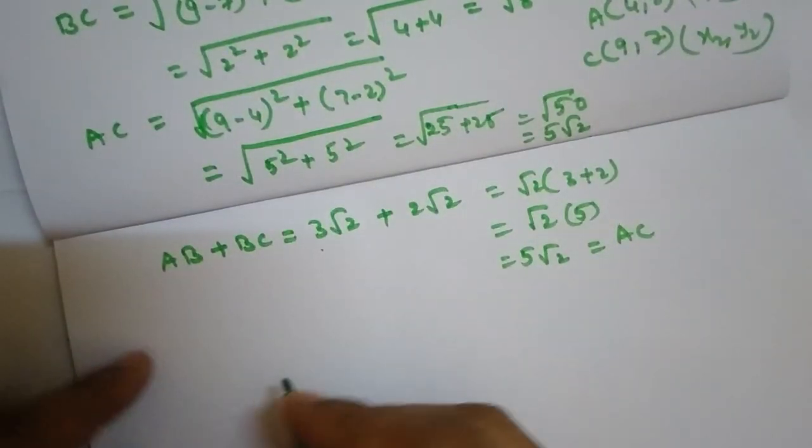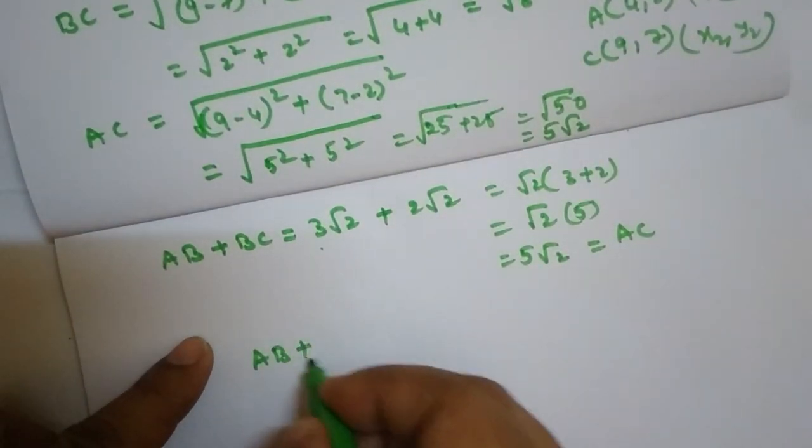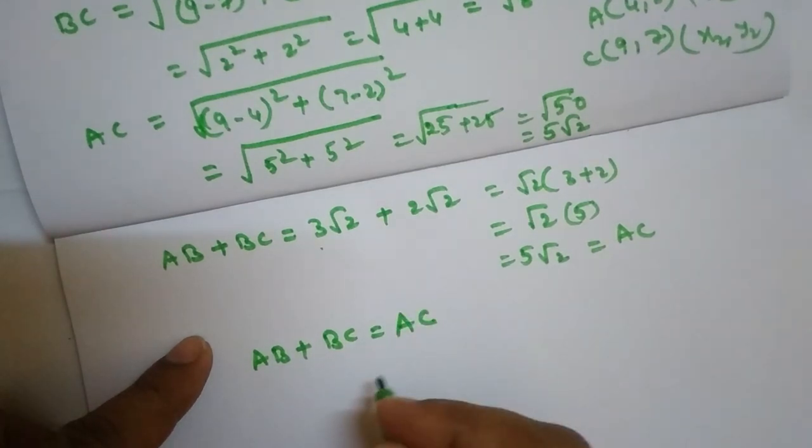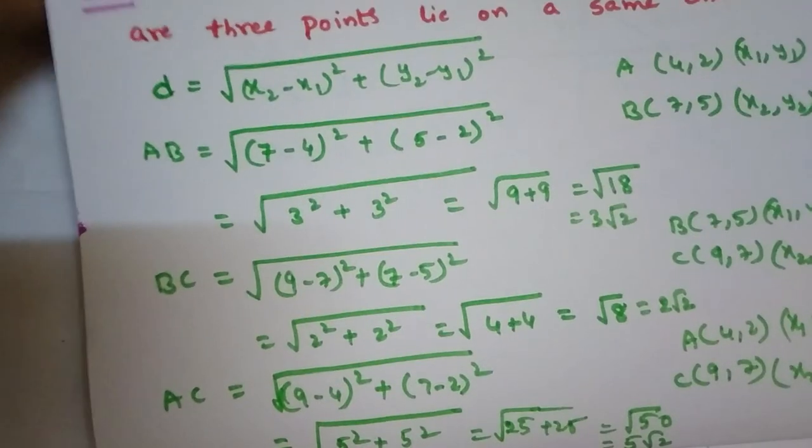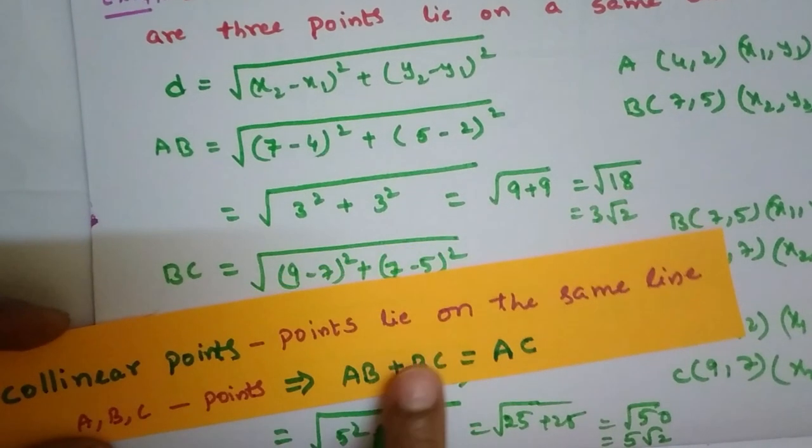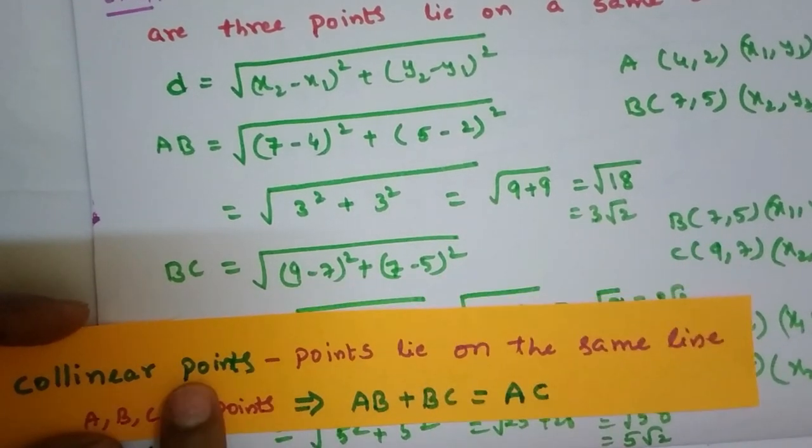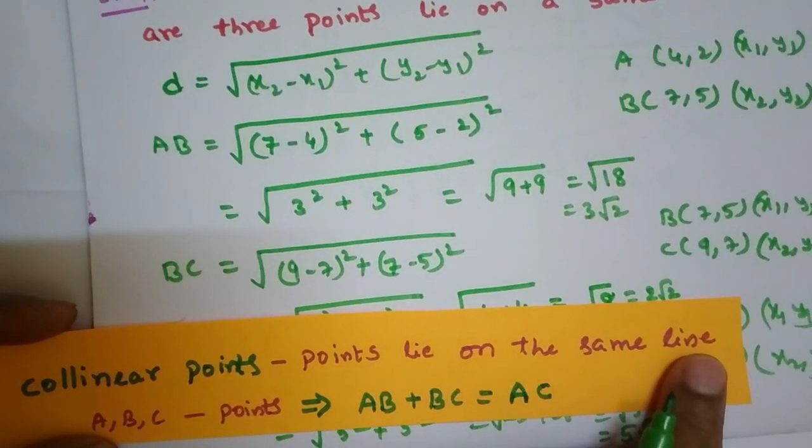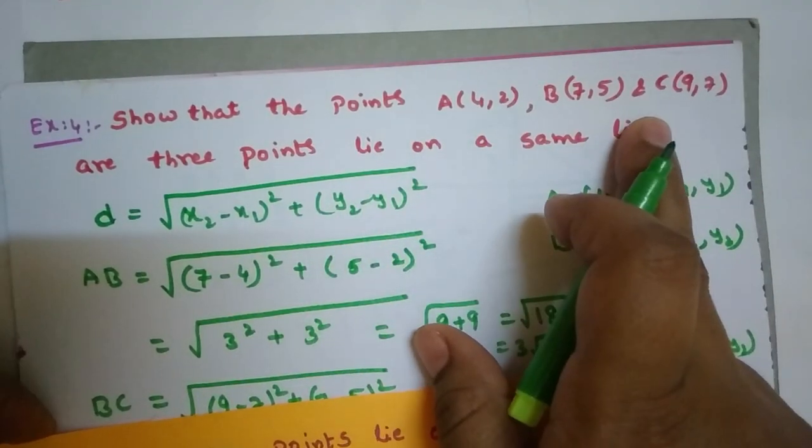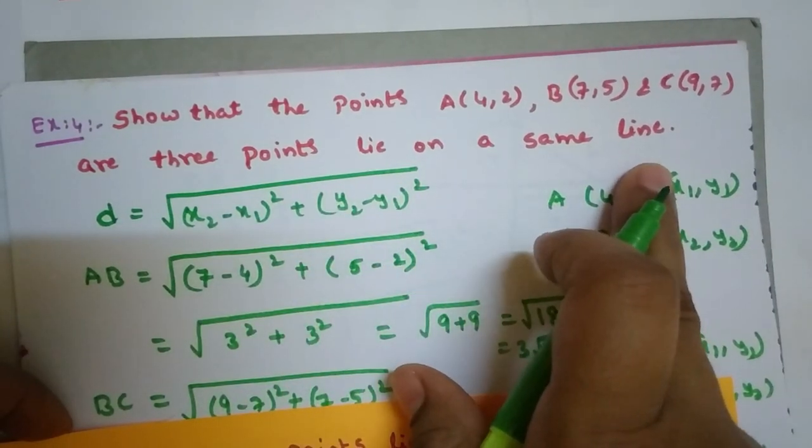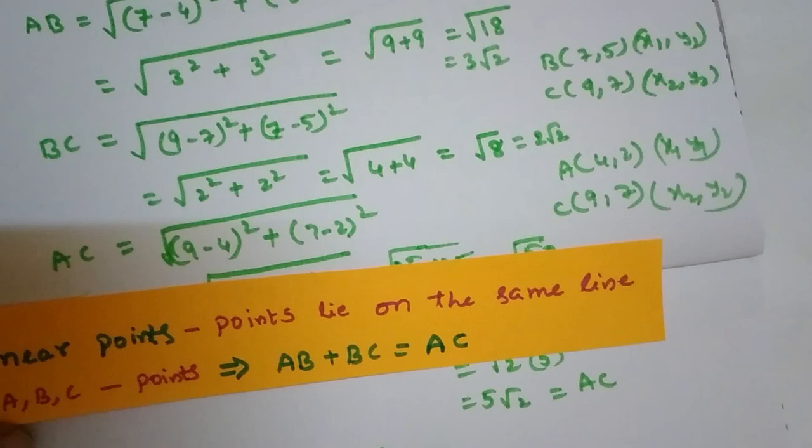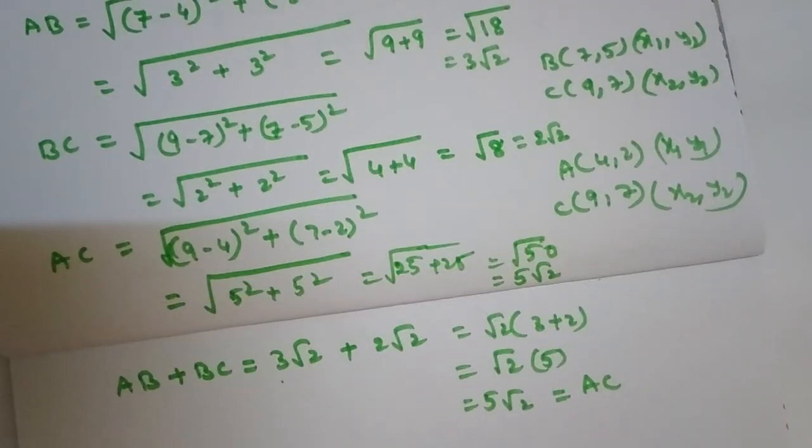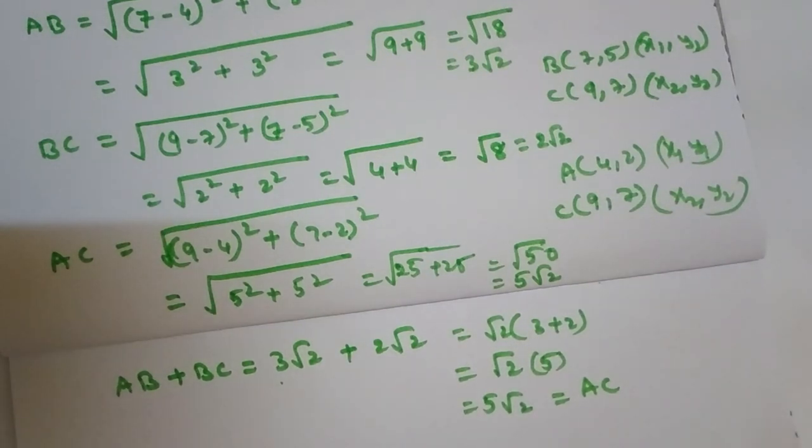So that's why AB plus BC equals AC. We write that the points lie on the same line. ABC are collinear points, and the three points lie on the same line. Thank you.